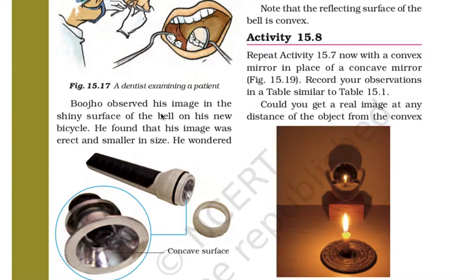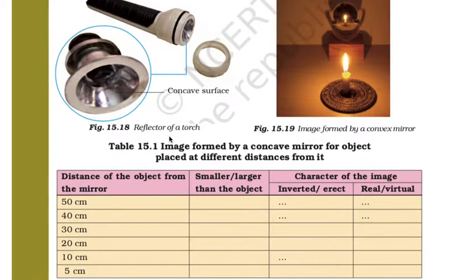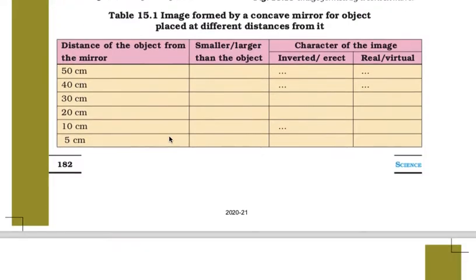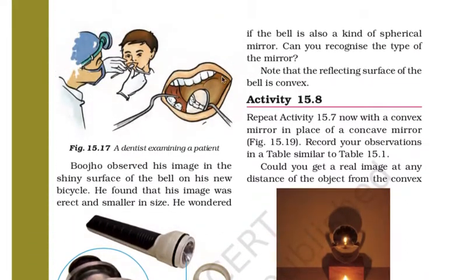Boju observed his image in the shiny surface of the bell of his new bicycle. He found that his image was erect and smaller in size. He wondered if the bell is also a kind of spherical mirror. Can you recognize the type of mirror? Note that the reflecting surface of the bell is convex.